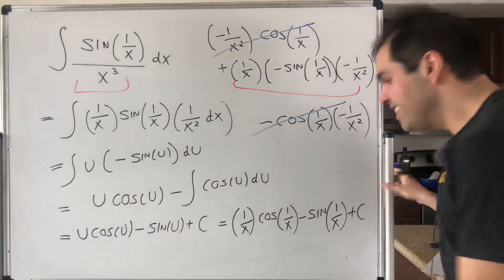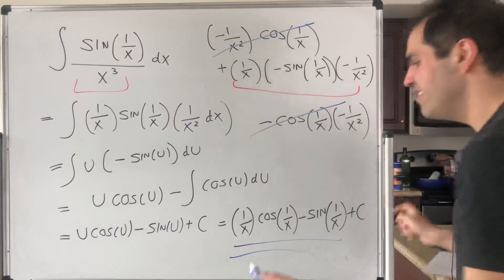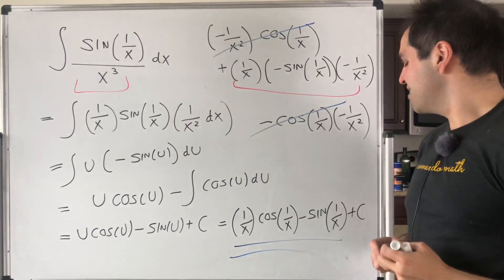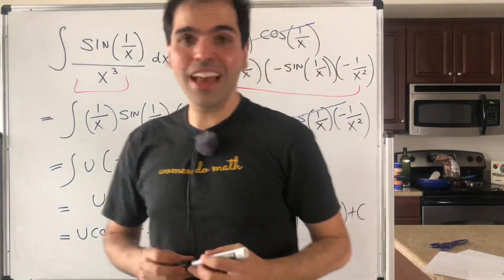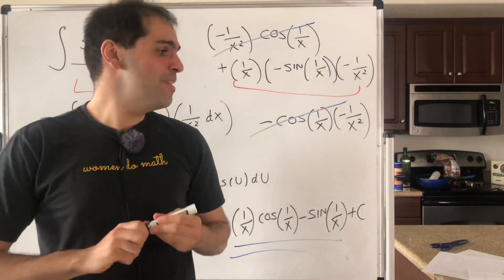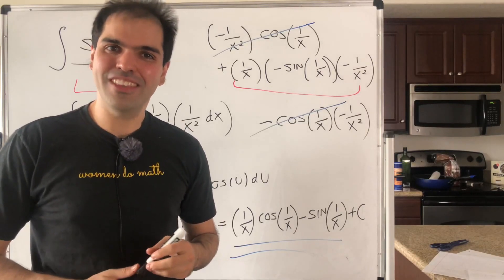So in fact, this is the answer. The antiderivative is 1 over x cosine of 1 over x minus sine of 1 over x. If you like this integration quickie, please make sure to subscribe to my channel. Thank you very much.